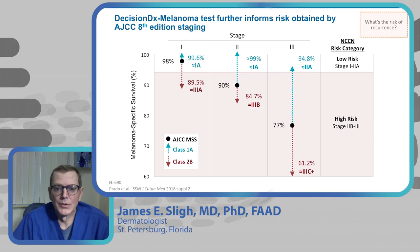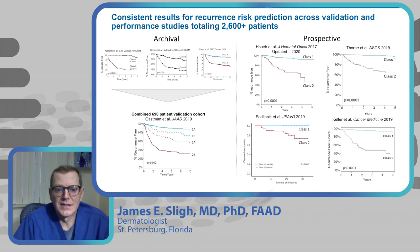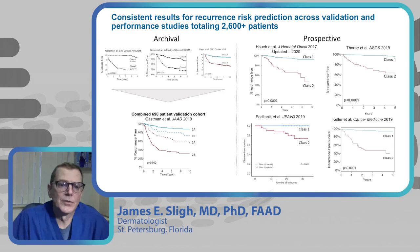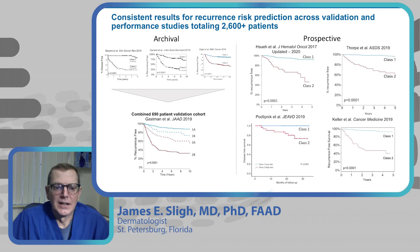There are also subsets of stage three patients with class 1A gene expression profiles that do quite well — their melanoma-specific survival of 94.8% crosses from high-risk to low-risk, more typical of a 2A patient. Across over 2,600 patients studied using DecisionDx, whether archival or prospective studies, the consistent message is that class 1 patients always demonstrate better outcomes — lower recurrence risk and distant metastasis — compared to class 2 patients.